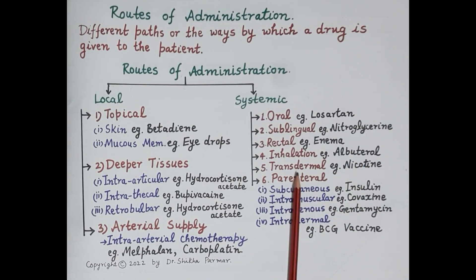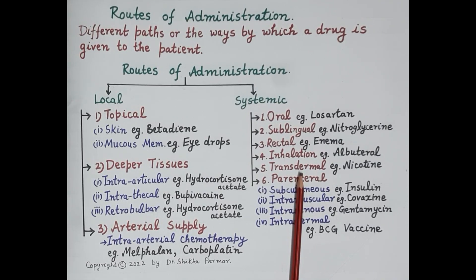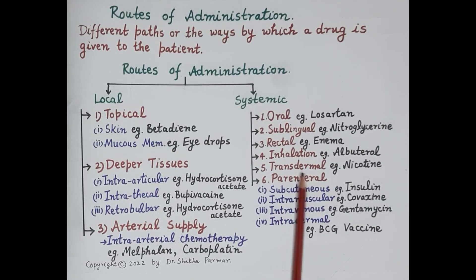The next systemic route is the transdermal route. Transdermal patches with medication are placed on the skin and the medication is absorbed through the skin into the blood. Absorption is slow but highly consistent. The transdermal route is useful only for lipophilic drugs. For example, nicotine patches help people quit smoking.